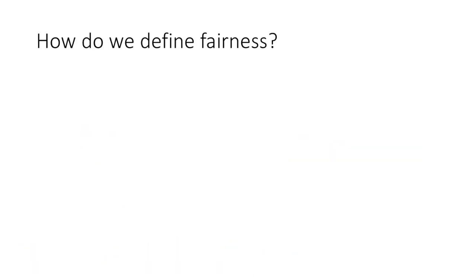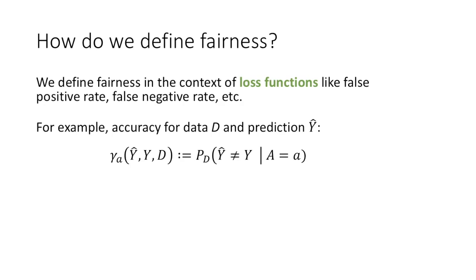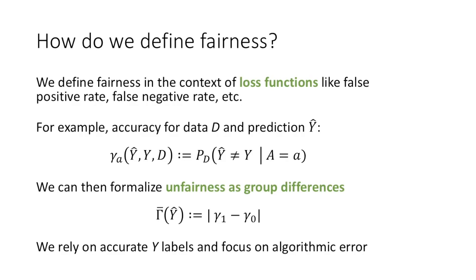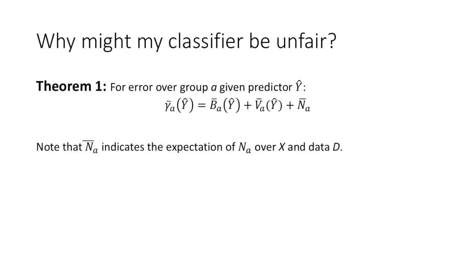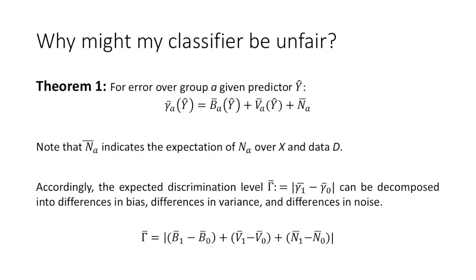We define fairness as the difference between loss metrics for two groups. One loss metric, little gamma, might be accuracy or false positive rate. Our fairness value, big gamma, would then be the absolute difference between two errors. Note that we rely on unbiased Y labels. In our paper, we show that you can decompose each loss function into bias, variance, and noise. Therefore, unfairness as the difference between two loss functions is equal to the sum of the differences in bias, the differences in variance, and the differences in noise.